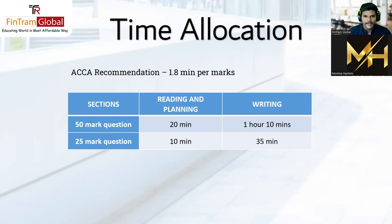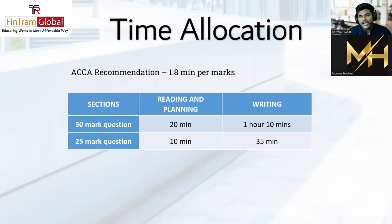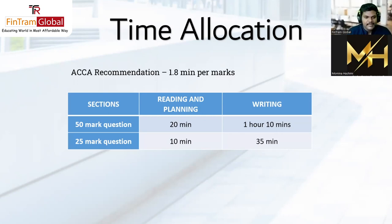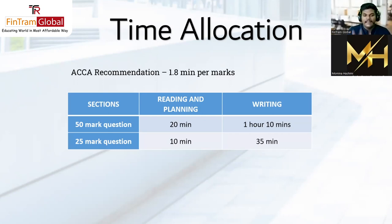For the 50-mark question in Section A, I would allocate around 20 minutes to read and plan, and one hour and 10 minutes to type in my answer. For the 25-mark questions, I would allocate 10 minutes to reading and planning and 35 minutes to writing the answer.